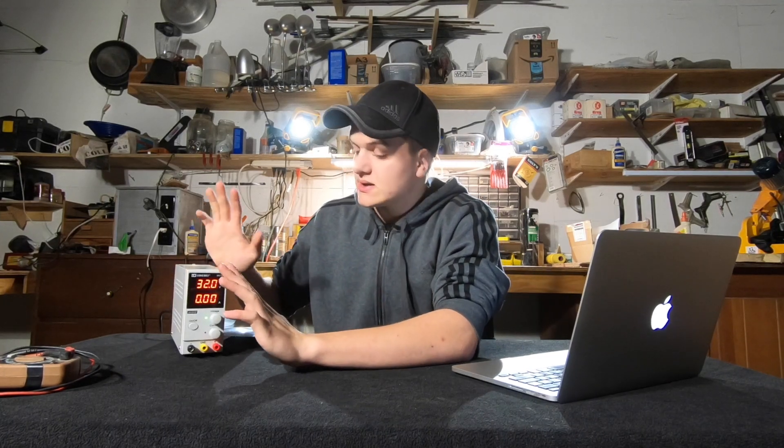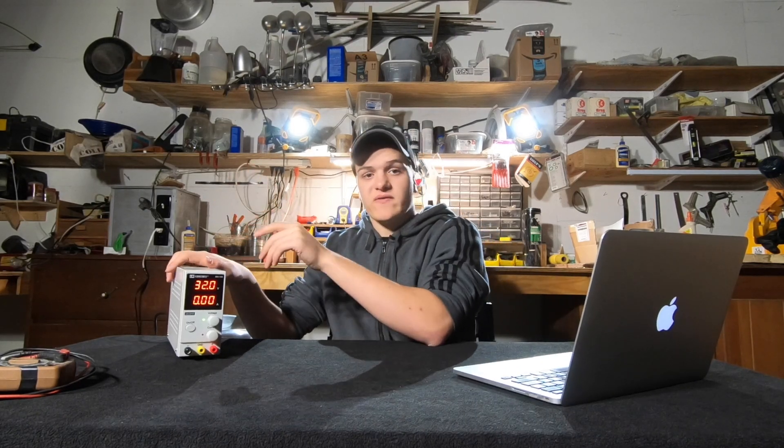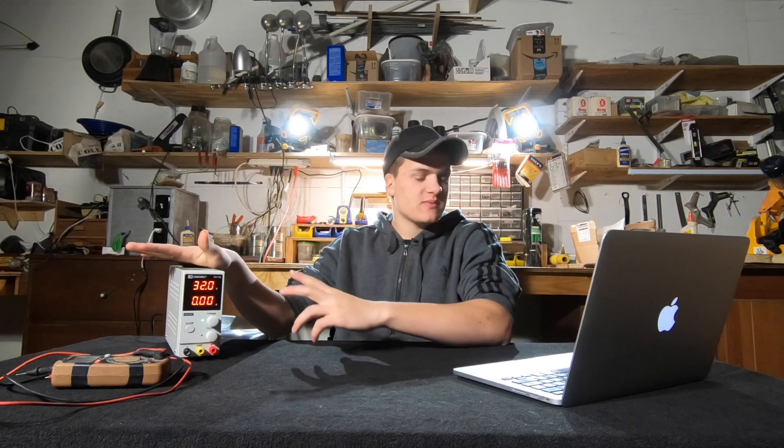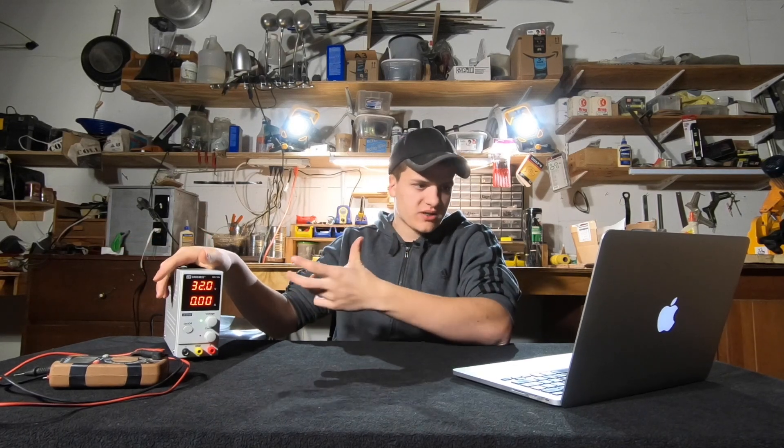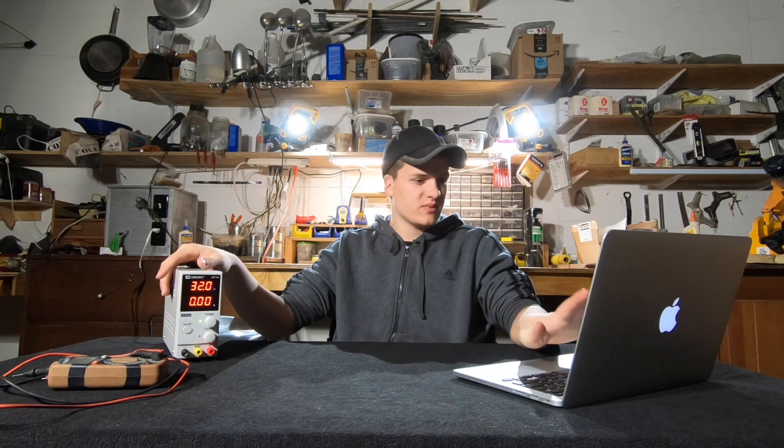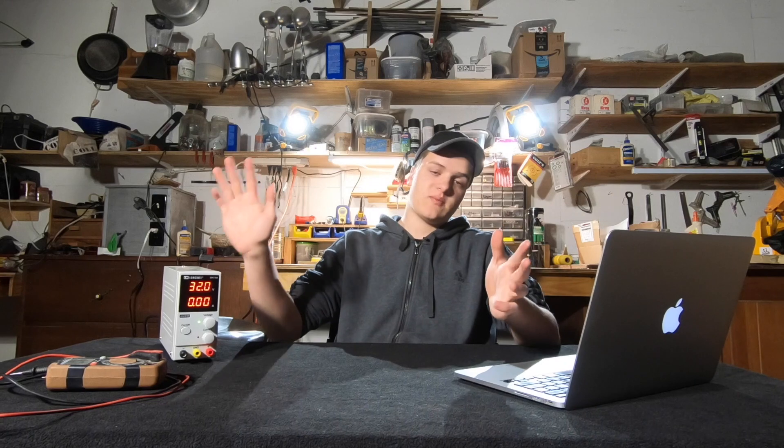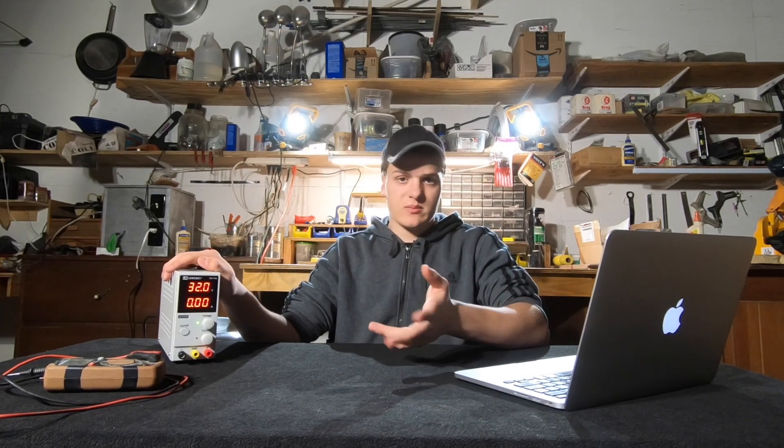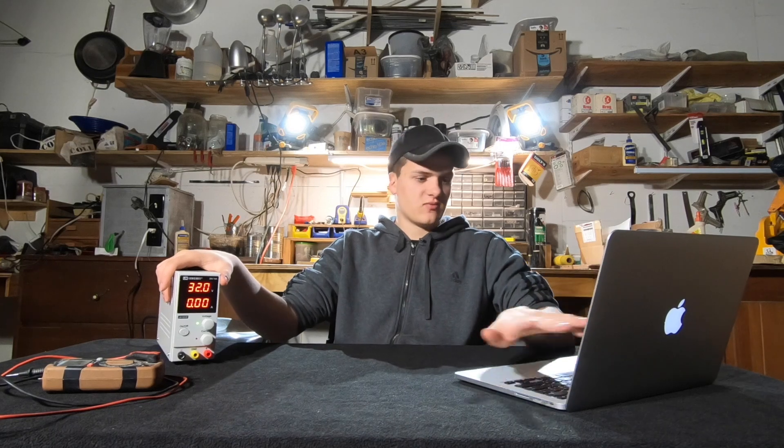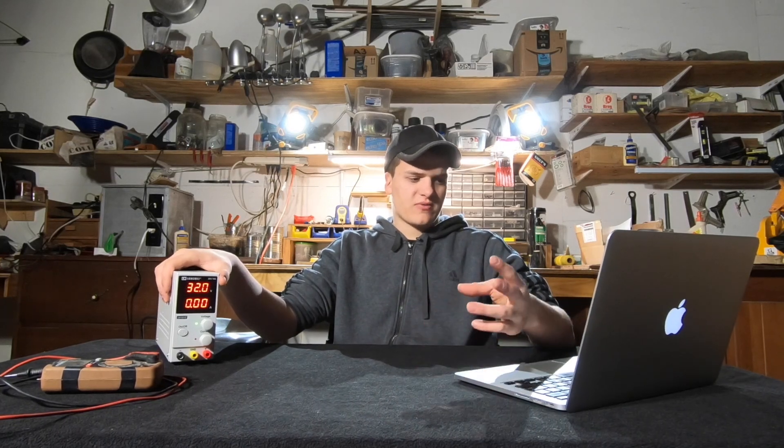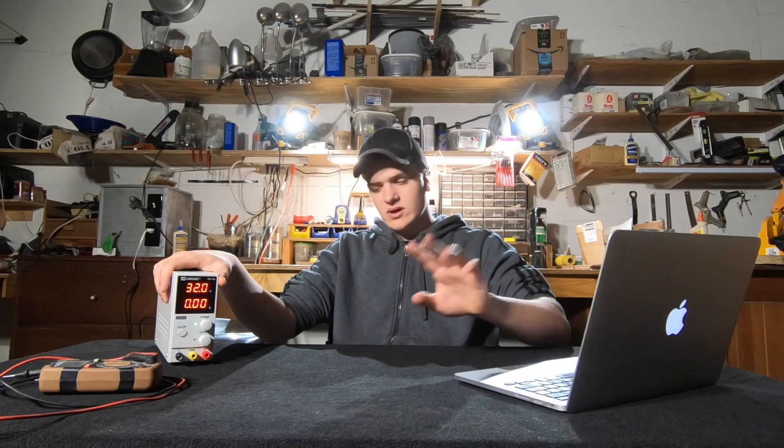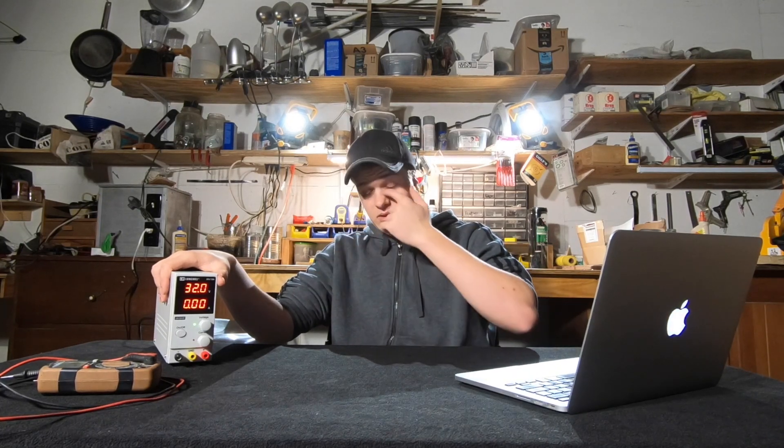This thing has an output voltage as I said of 0 to 30 volts and an output current of 0 to 10 amps. Voltage display accuracy is supposed to be plus or minus 0.5%. Current display accuracy is supposed to be same thing, plus or minus 0.5%. Efficiency is supposed to be greater than 85%. That's all the basic stuff. If you're an electrical engineer or somebody more advanced then you can go to the website. There's some more technical like load regulation, line regulation, noise, whatever. That's all the basics.